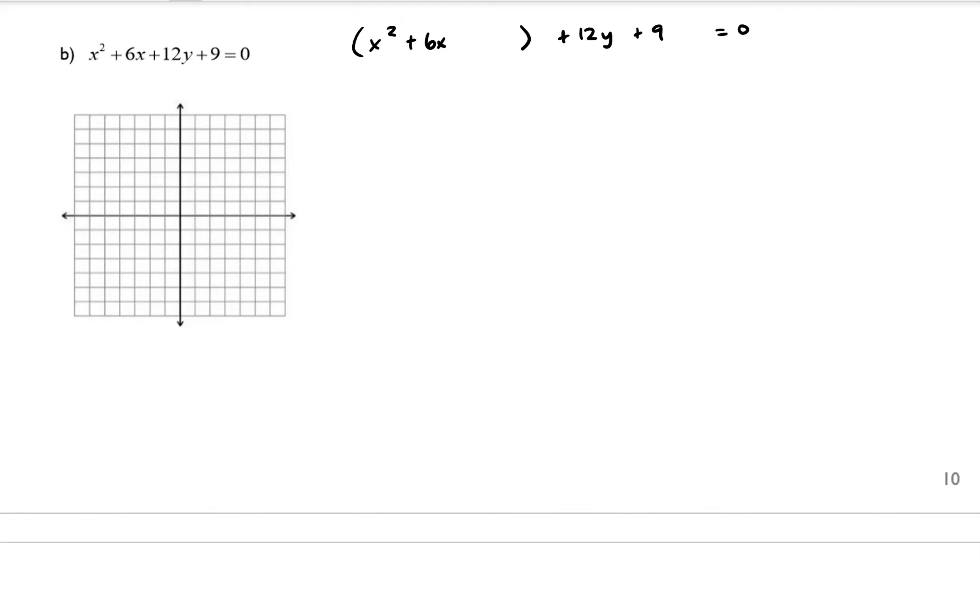And how that's going to work is we're going to take this value, which is our B value, and divide it by 2. And then we're going to square that. So 6 divided by 2 is 3. And then we're going to square that, which is 9. So I am now going to add a 9 here. However, I can't just randomly add 9 out of nowhere. I need to compensate for that by subtracting 9 over here.